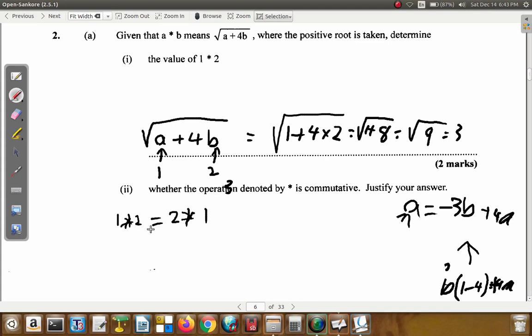Alright? If 1 star 2 is equal to 2 star 1, and then, if you try that and they're not equal, then it's not commutative. Now, 1 star 2 would be the square root of 1 plus 4 by 2. What about 2 star 1? You would put 2 here, 2 first plus 4 by 1. Let's check this out and see what happens. This is the square root of 1 plus 8 is equal to the square root of 2 plus 4.